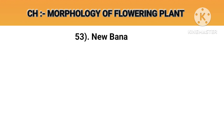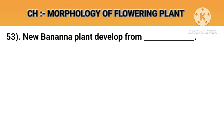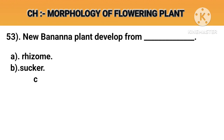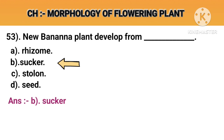Question number 53. New banana plants develop from. Option A: Rhizome. Option B: Sucker. Option C: Stolon. Option D: Seed. Answer B: Sucker. Thank you.